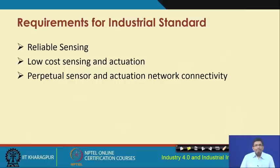In terms of the requirements for industrial standard, it is required to have reliable sensing, low-cost sensing and actuation, and perpetual sensor and actuator network connectivity. What is meant by these requirements is that we need low-cost but higher-performing reliable sensors and actuators. They have to be reliable and higher-performing, and they have to be low cost because we are going to use a large number of these different sensors. It should not happen that one sensor is so costly that you can only use it for one machine, because in IIoT you have to internetwork all these different machines.